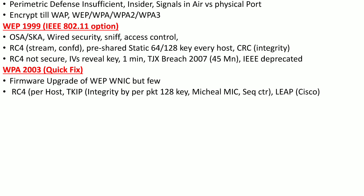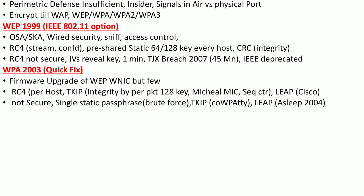Cisco also improved TKIP by introducing LEAP — Lightweight Extensible Authentication Protocol. However, WPA is also not fully secure because it uses a single static passphrase. Although the passphrase should be at least 14 complex characters, it is still vulnerable to brute-force attacks. TKIP and LEAP are vulnerable to an attack known as CoWPAtty, and LEAP was also found vulnerable to another attack in 2004 called ASLEAP.